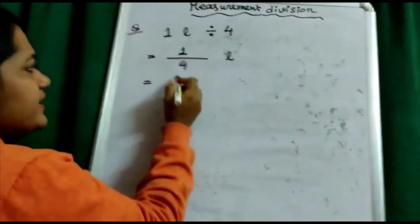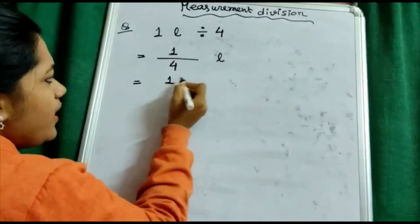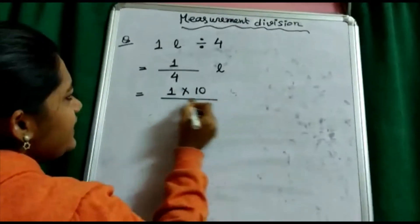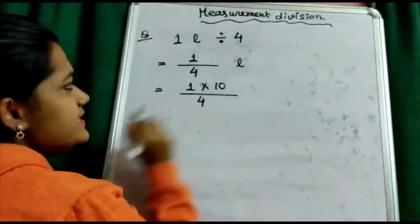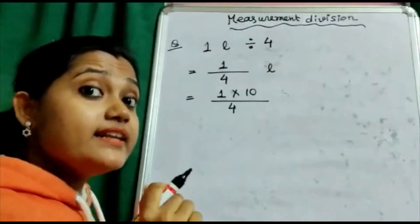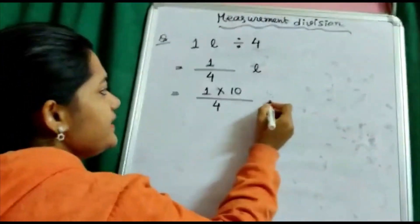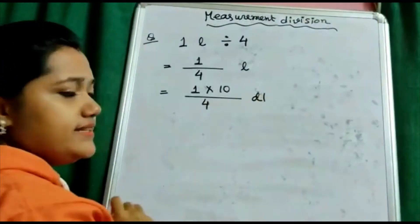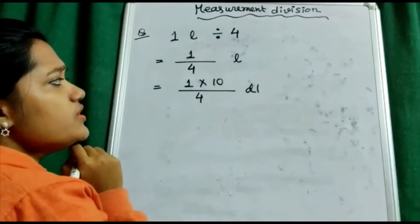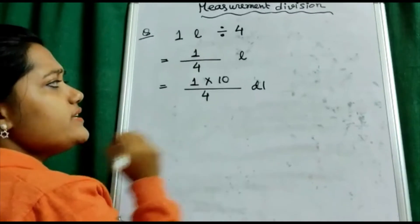Here, in place of one, if I'm multiplying it by 10 and divided by four as it is, then liter multiplied by 10, which unit will I get? Yes, deciliter. But 10 is not divisible by four, so let us try to do it by 100.